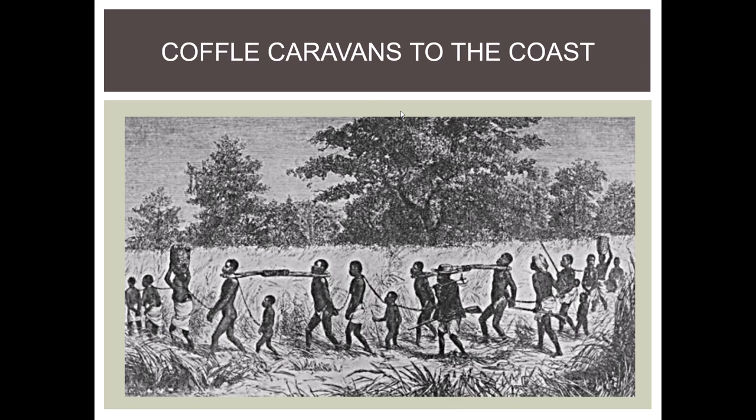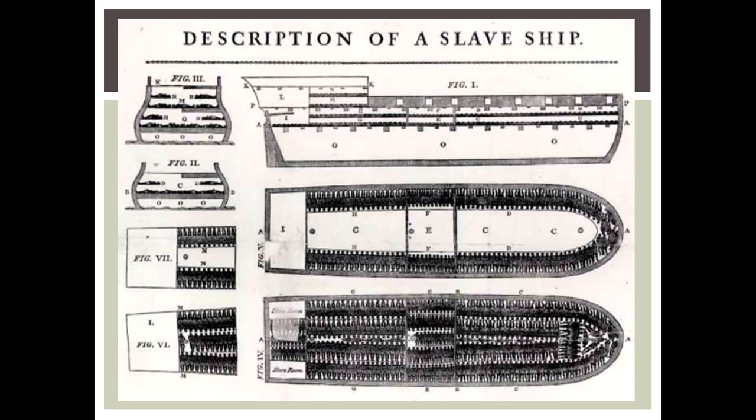Here's an example of a coffle caravan going to the coast — you can see the people are chained together, small children tied to adults, marched to the sea with their emergency provisions. This is an example of a slave ship, and you can see all the people depicted as laying down because they wanted to get as many people on the ship as possible. This is probably an example of a tight-packing captain.